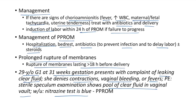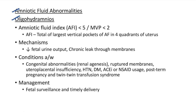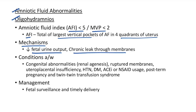Amniotic fluid abnormalities: oligohydramnios is defined as AFI <5 or maximum vertical pocket <2. AFI is the total of the largest vertical pocket of amniotic fluid in each of the four quadrants of the uterus. Mechanisms: decreased fetal urine output or chronic leaking through membranes. Associated conditions: congenital abnormalities like renal agenesis, ruptured membranes, uteroplacental insufficiency, hypertension, diabetes, ACE inhibitor or NSAID use, post-term pregnancy, and twin-to-twin transfusion syndrome.